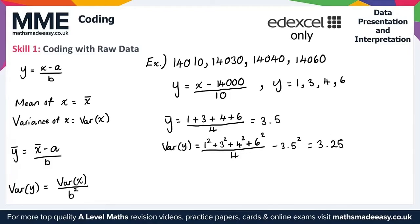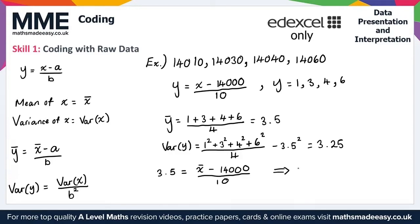Now we find the mean of the original values. Setting 3.5 equal to (x-bar minus 14,000) all over 10, then multiplying both sides by 10 and adding 14,000, we get x-bar equals 14,035.